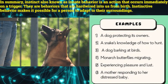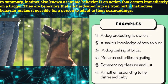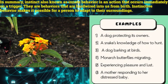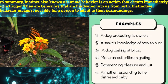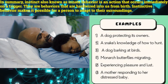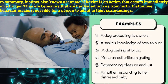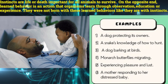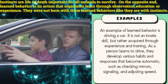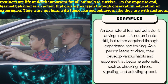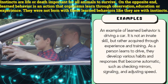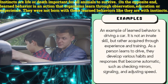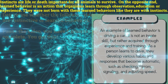In summary, instinct — also known as innate behavior — is a natural response that occurs immediately upon a trigger. These are behaviors that are hardwired into us from birth, and instinctive behavior makes it possible for a person to adapt to their surroundings. Instincts are life-or-death important for all animals to survive. On the opposite end, learned behavior is something that organisms learn through observation, education, or experience — they were not born with these learned behaviors like they are with instincts.